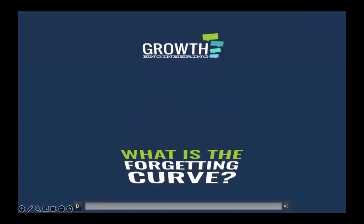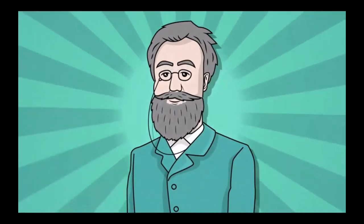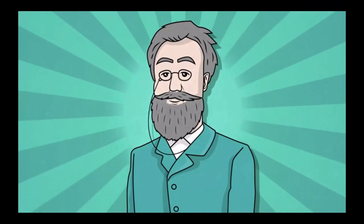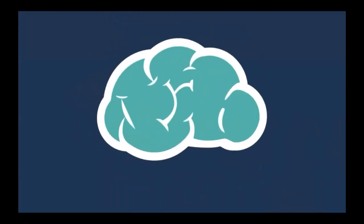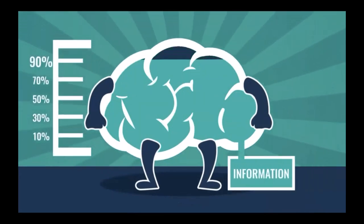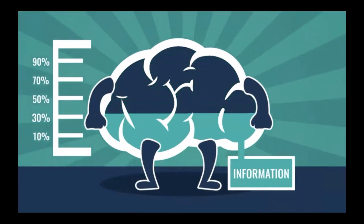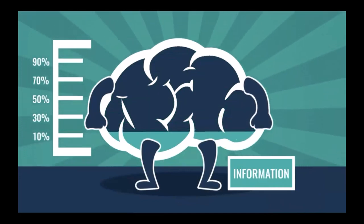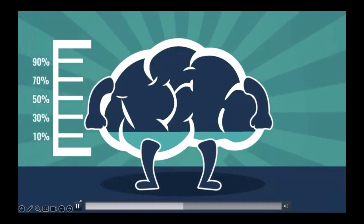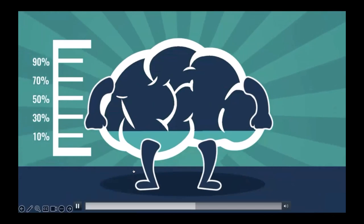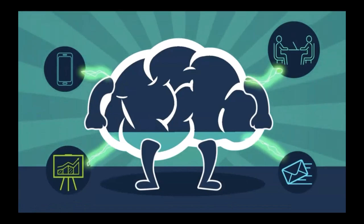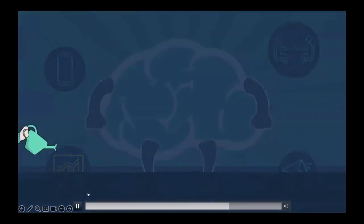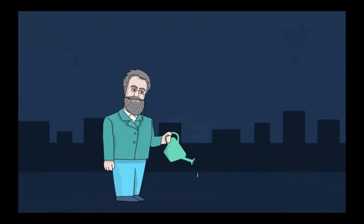What is the forgetting curve? Roll back to 1885 — Herman Ebbinghaus was pioneering an experimental study of memory. His rigorous research method needed only one subject: himself. His findings showed just how rapidly information seeps out of our brains. Within a month, Herman had forgotten 90% of everything he'd originally learned. Our brains operate a strict 'use it or lose it' policy when it comes to information. To make information sticky, it needs to be regularly reinforced — retaining learning is like watering a plant.